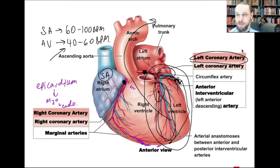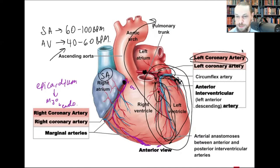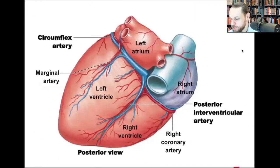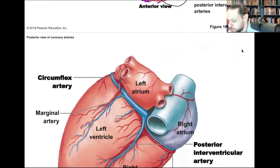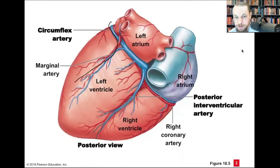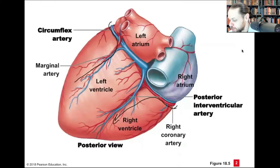Individual anatomy varies — one person may have a slightly longer circumflex artery than another. Looking at the back wall of the heart: following the circumflex, you see it supplying the lateral aspect of the heart. The right coronary artery continues posteriorly, becoming the posterior descending artery and supplying the right ventricular side.